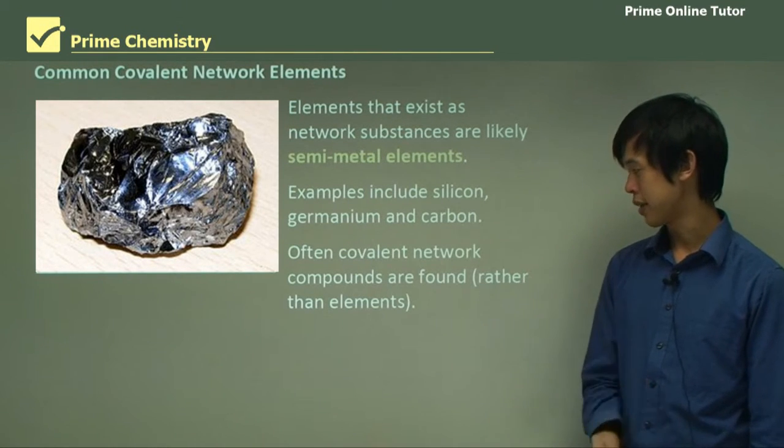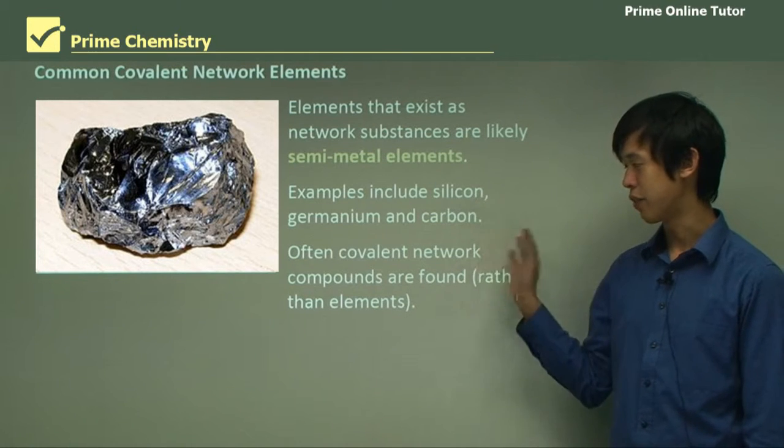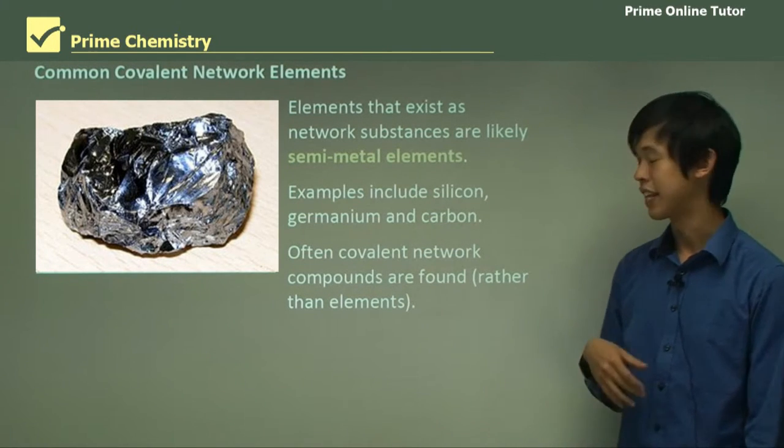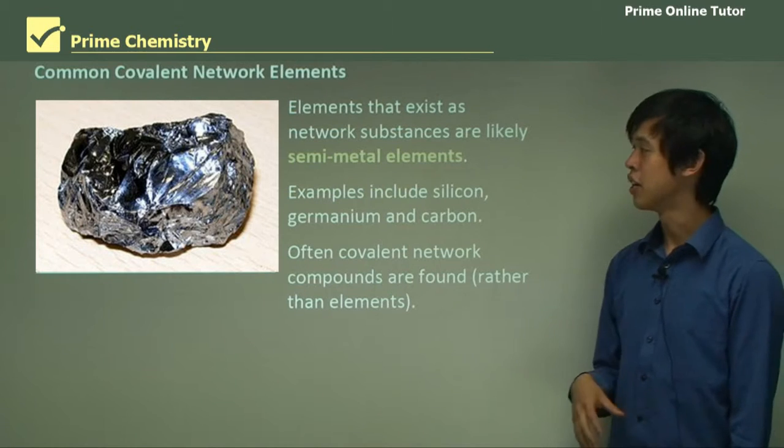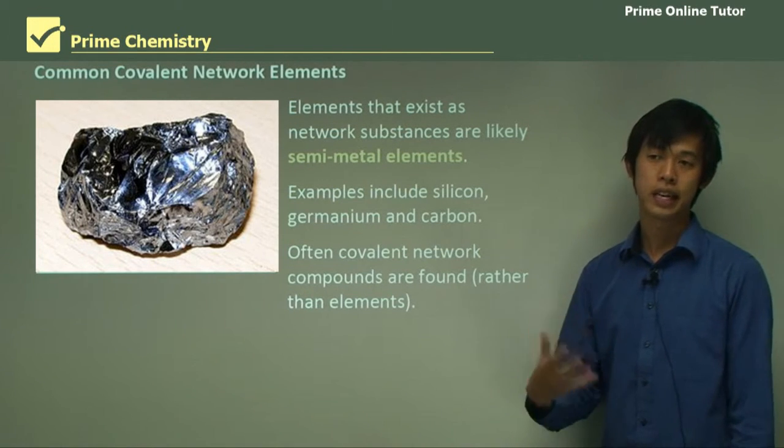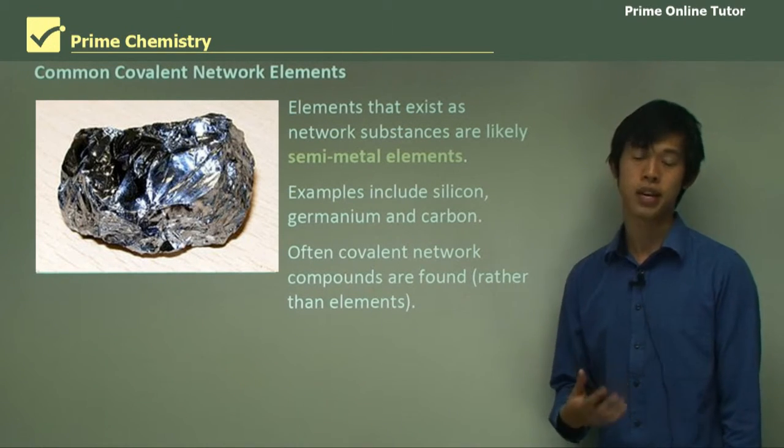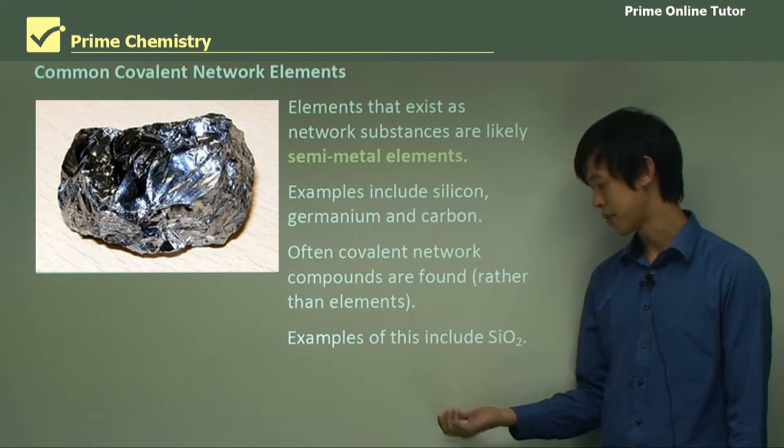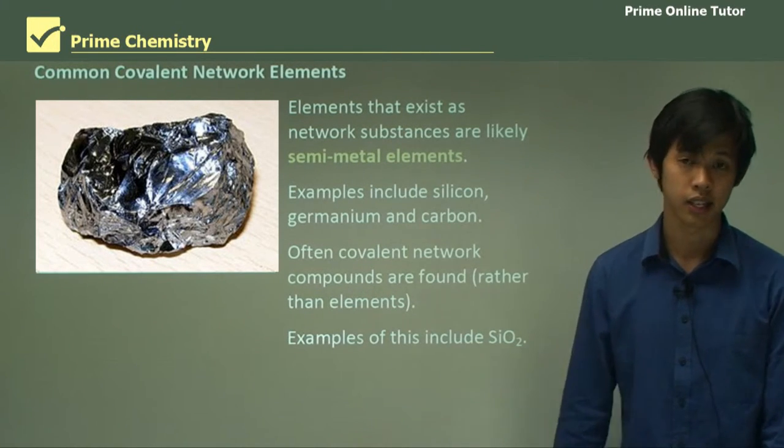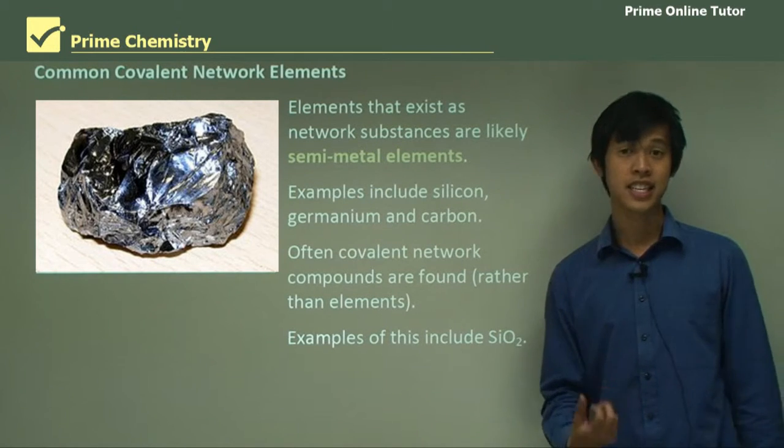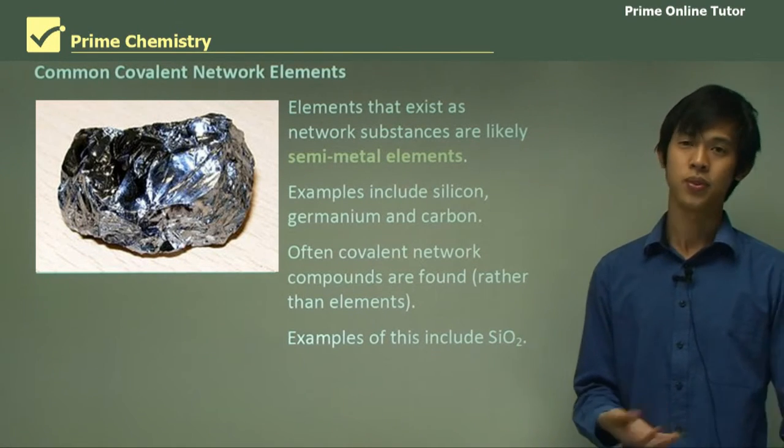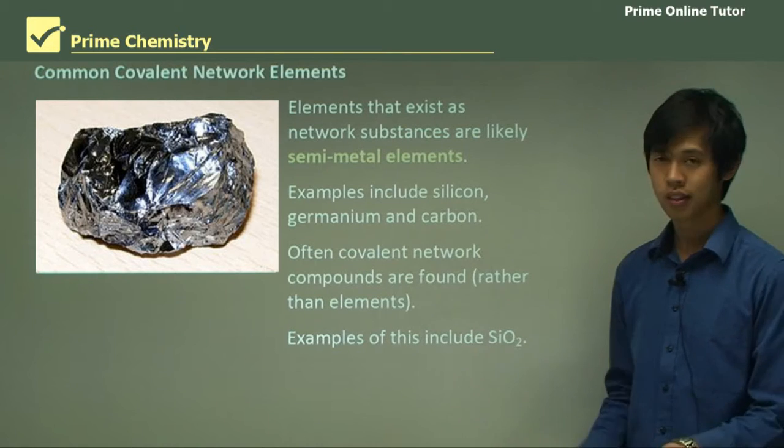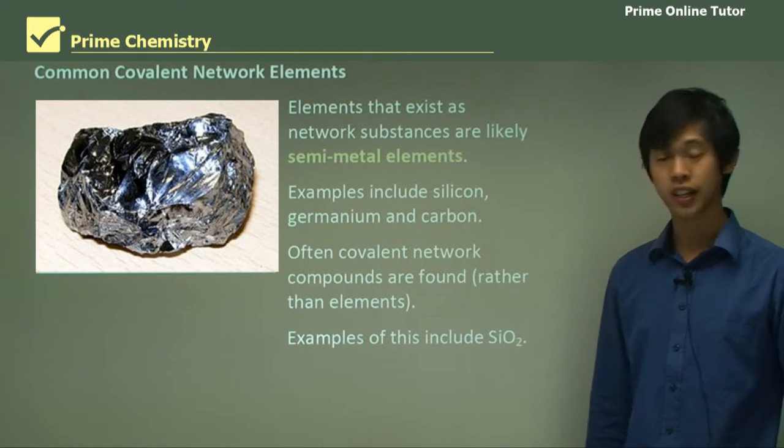So often covalent network compounds are found, rather than the elements, the covalent network elements. So we more likely find covalent network compounds compared to covalent network elements. So an example of this would include SiO2, so silicon dioxide. Silicon dioxide is sand, or quartz, so we see that all the time. That's just an example of a covalent network compound.